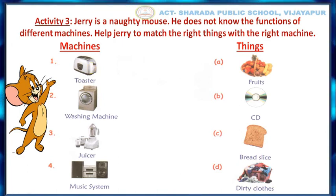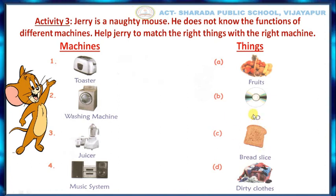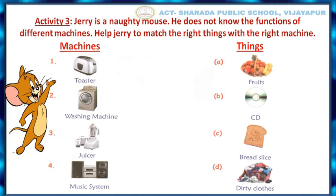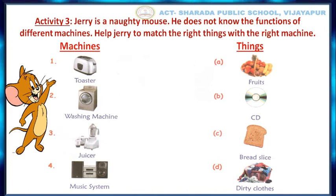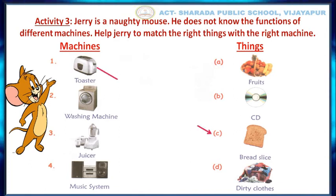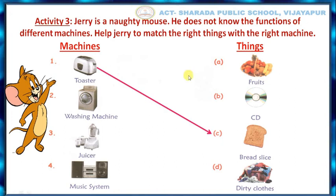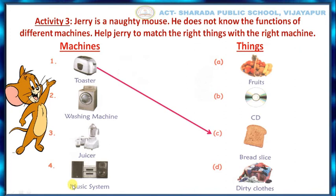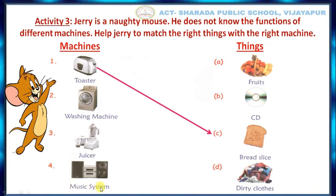Yes, you are right. The answer is bread slice. Bread is toasted in a toaster. So children, draw an arrow from the toaster towards the bread. Similarly, you have to match washing machine, juicer and music systems.